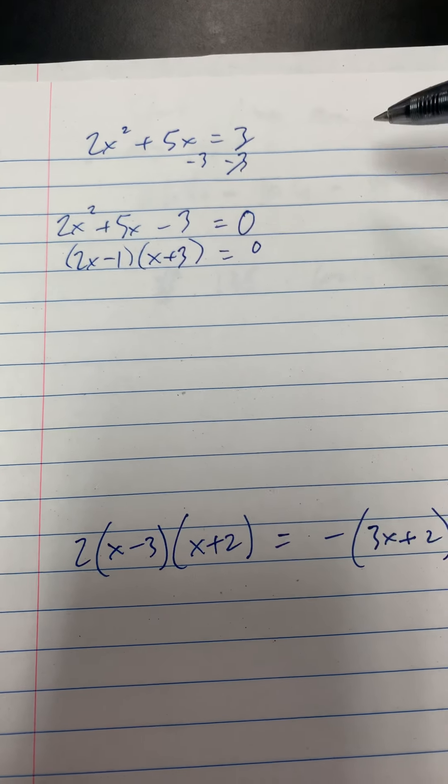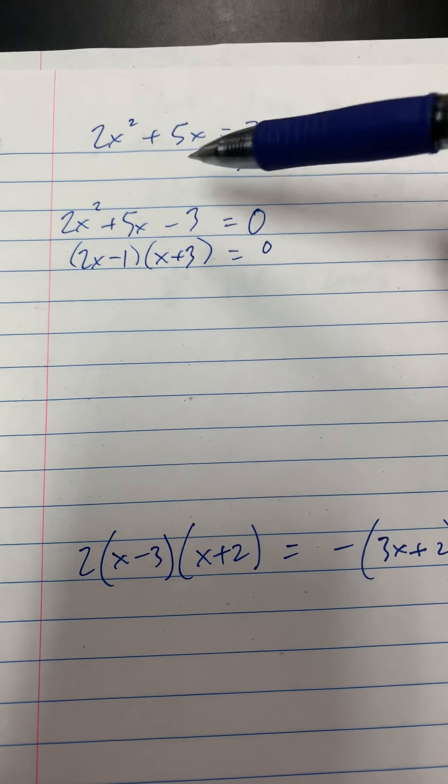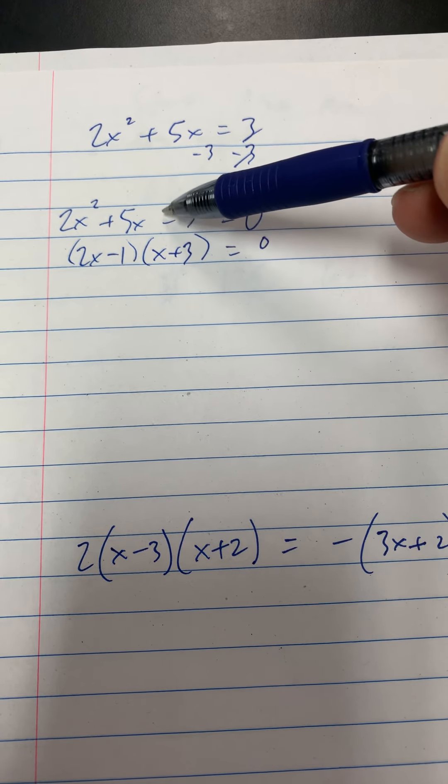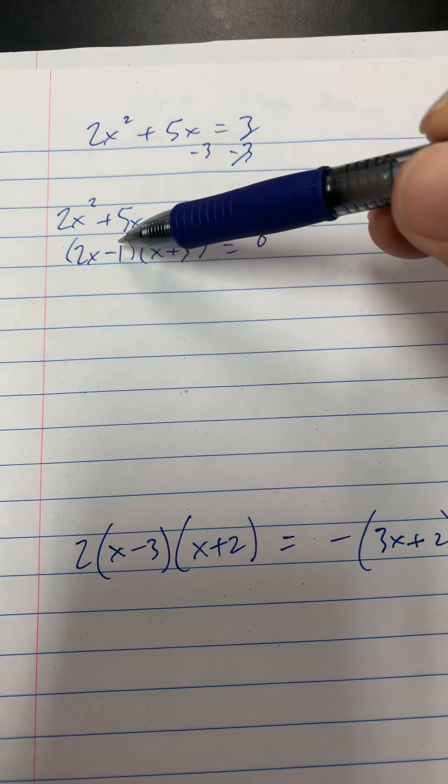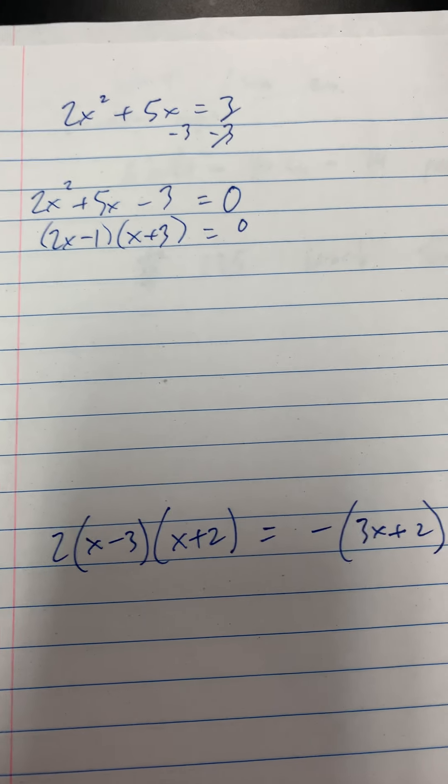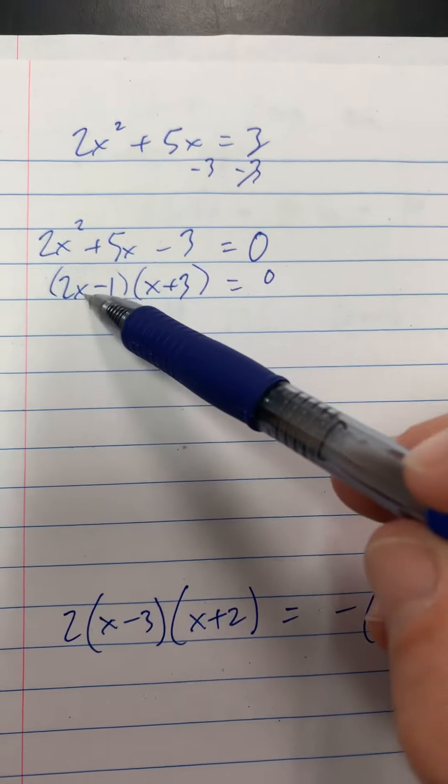And you can check that on your own time. But just remember the rules for factoring trinomials, look at the sign of the last term. If it's negative, that means the signs of your binomials are going to be opposite. Now, once you factor, we're just going to set each factor.